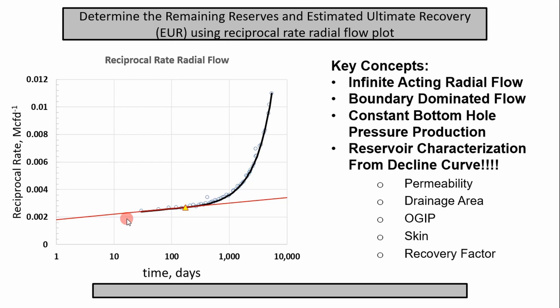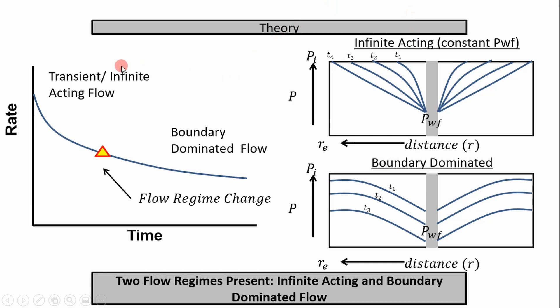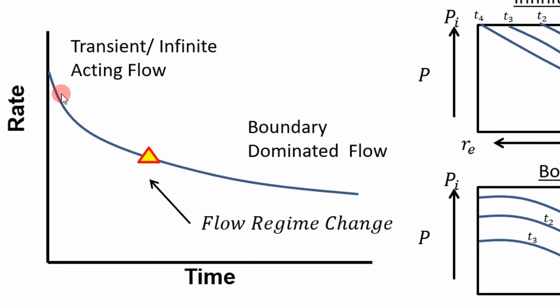Obviously, if you start messing with the choke, your interpretation is going to be affected. On a typical rate time or rate cume plot, you have a transient region — which is infinite acting flow, another term for it — and then boundary dominated flow. There's going to be some point at which the reservoir flips from infinite acting to boundary dominated, but there is no way to determine this point from typical decline curves like rate cume and rate time.